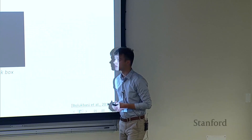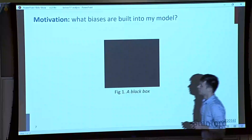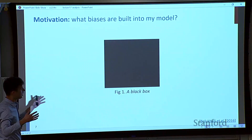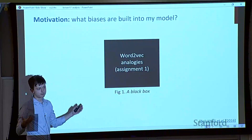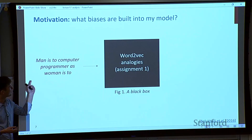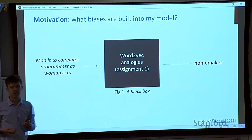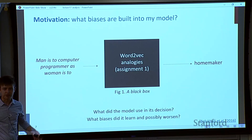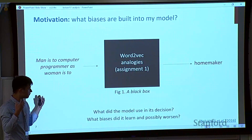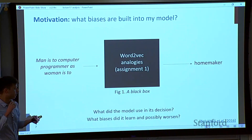Another important motivation is model biases. If you take your Word2Vec or GloVe analogies solver and give it 'man is to computer programmer as woman is to,' it gives you the output 'homemaker.' This is a real example from a paper. What did the model use in its decision? What biases is it learning from data and possibly making even worse? That's the kind of thing you can also do with model analysis, beyond just making models better according to a summary metric.